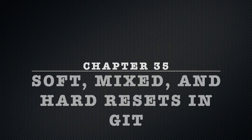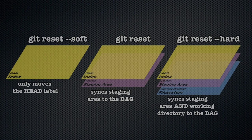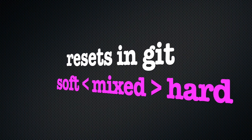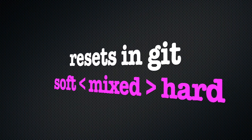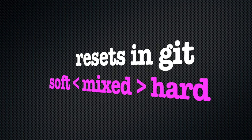Chapter 35: soft, mixed, and hard resets in Git. The default mode of git reset is a so-called mixed reset, which personally I think should be called a firm reset, because it sits between a soft and a hard reset.